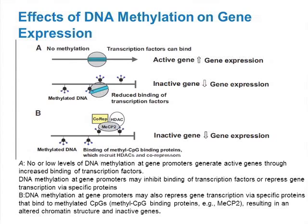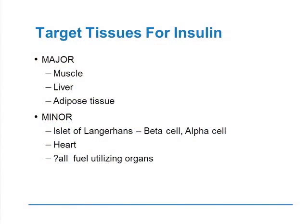When there's no methylation you get increased gene expression — an active gene. But as you methylate, and depending on where you methylate, you can get completely different gene expression. Moving to the target tissues for insulin: the major ones are muscle, liver, and fat. Minor ones include the beta cell — even though it produces insulin, it is still a target organ for fuel utilization, because you have to use fuel to make insulin — as well as the heart, and all other fuel-metabolizing organs.